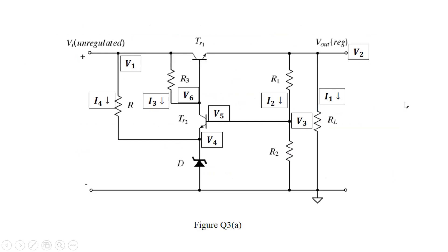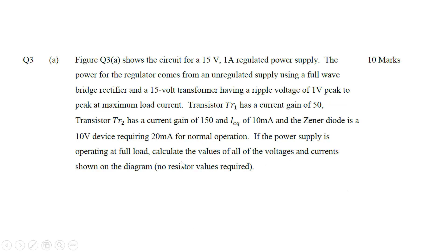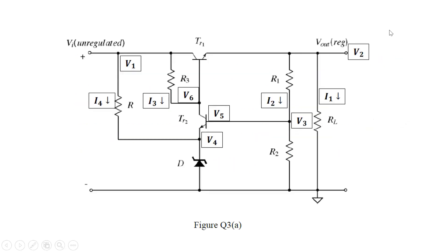Question three was a power supply question. Given the power supply circuit operating at full load, calculate all voltages and currents — no resistor values needed, it was straight interpretation. It's a 15-volt, 1-amp supply. So immediately: V2 is 15 volts, I1 is 1 amp (full load). The unregulated supply uses a full-wave rectifier with a 15-volt transformer, giving a peak voltage of 15 × √2 ≈ 21.2 volts.